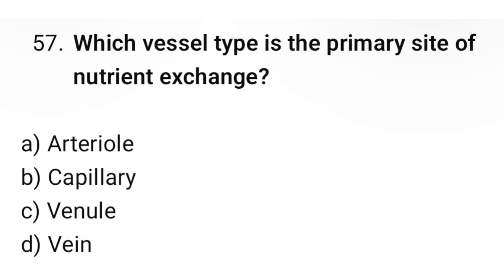Question number 57: Which vessel type is the primary site of nutrient exchange? The correct option is B. Capillary.